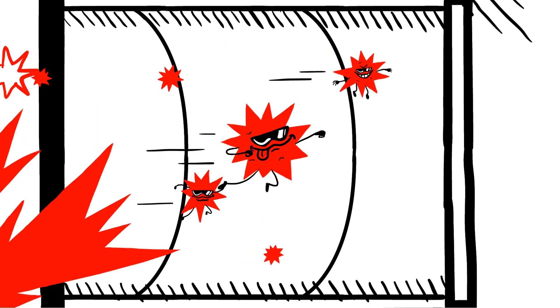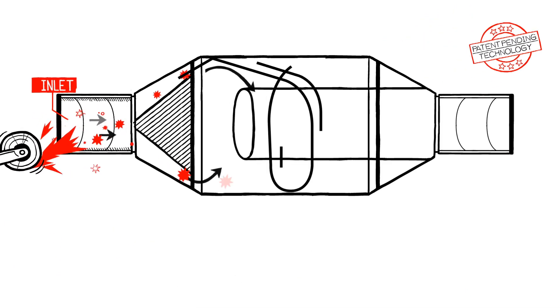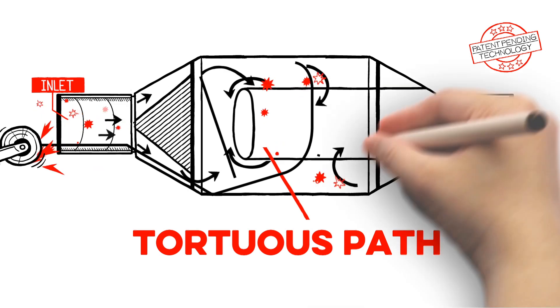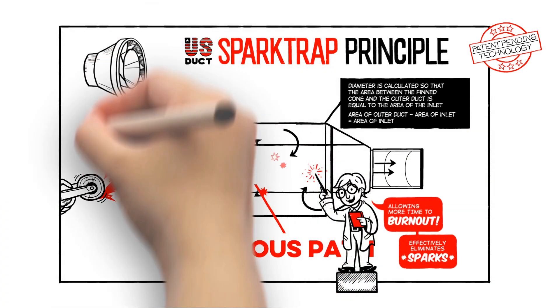Well, that isn't a problem anymore with U.S. Duck's new spark trap. Its patent-pending technology tumbles the ember through a tortuous path, forcing contact with more oxygen and allowing more time for the spark to burn out.